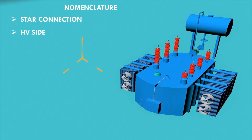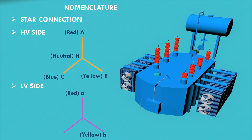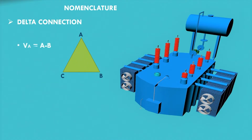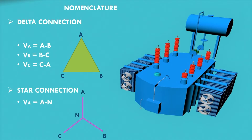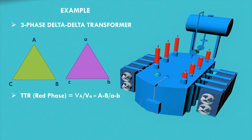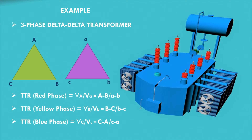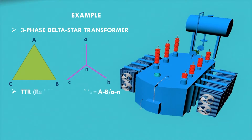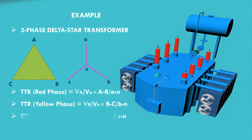For a star connection, the phases on the HV side are denoted by capital A, B, C, and the neutral by capital N, whereas on the LV side the neutral is defined by small n. In delta connection, voltages of different phases are measured with respect to each other, whereas in star connection the voltages are measured with respect to the neutral point.